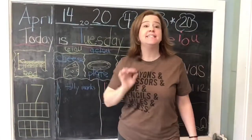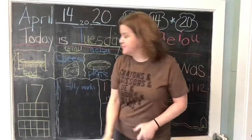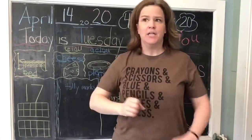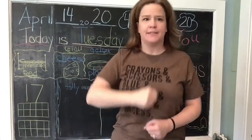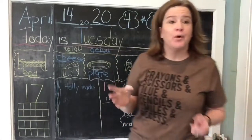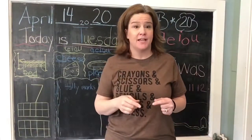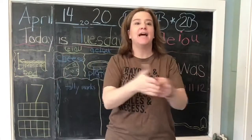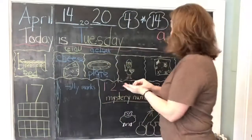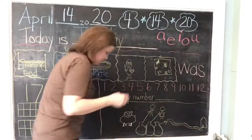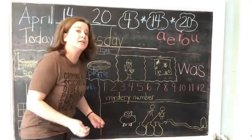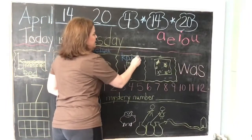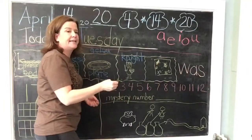Our next one is 'night.' If we're talking about night, it's the night when you go to bed. Let's pull it apart and hear the long vowel sound. N-I-T, night. So we're going to write 'night.' I'm going to use blue for my long I. N-I-T, night.